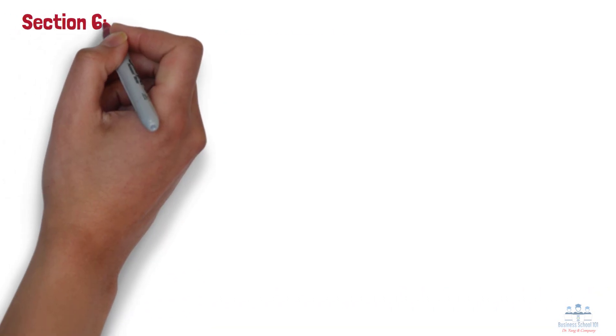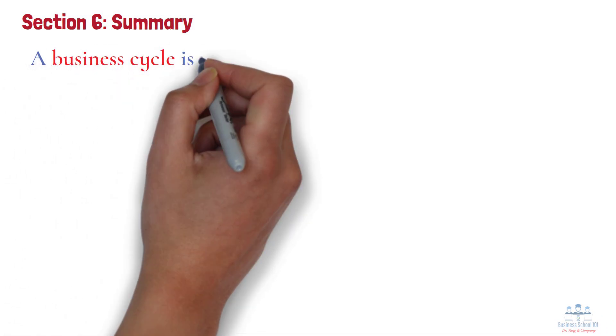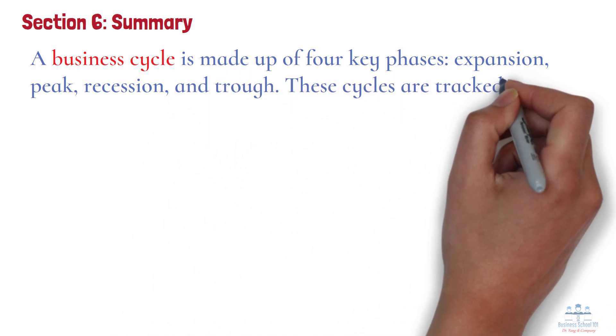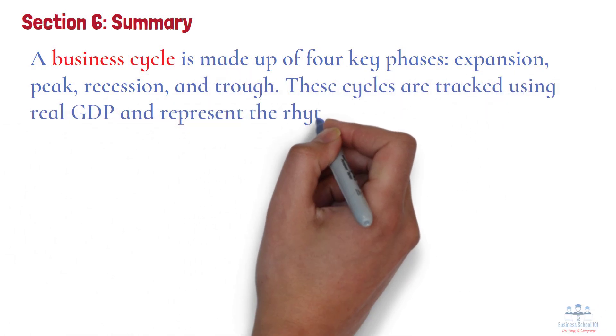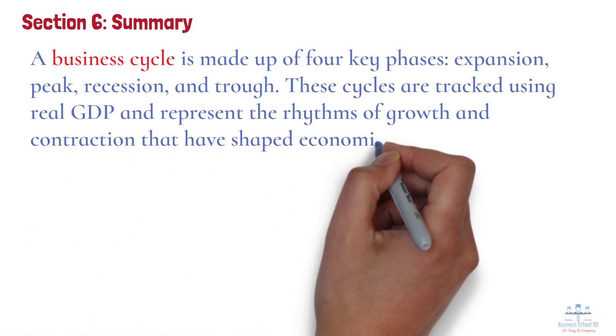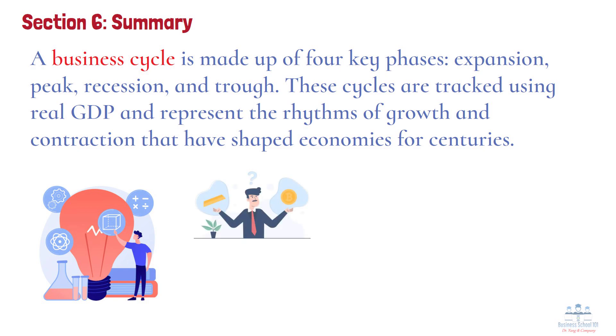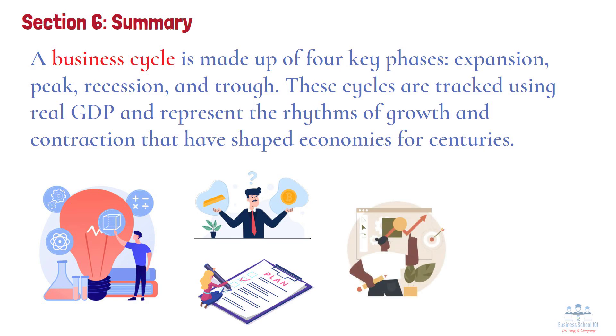Section 6: Summary. To recap, a business cycle is made up of four key phases: expansion, peak, recession, and trough. These cycles are tracked using real GDP and represent the rhythms of growth and contraction that have shaped economies for centuries. Understanding business cycles isn't just academic, it's highly practical. Recognizing where we are in the cycle helps individuals make smarter financial decisions, businesses plan more effectively, and policymakers design strategies to stabilize the economy. The better you understand these patterns, the better equipped you are to navigate life's economic ups and downs, and maybe even anticipate what's coming next.